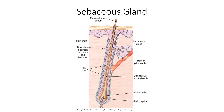We also have another set of glands called sebaceous glands — fancy language for oil glands. Sebaceous glands produce sebum, or oil, which helps to waterproof our skin and hair. They are always associated with a hair. The function of sebum is to help lubricate and waterproof skin and hair.